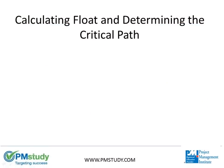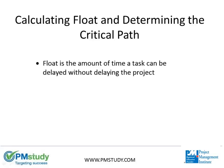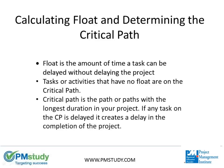Now that we have finished the forward and the backward pass, let's determine float for each task and locate the critical path. Remember, float is the amount of time a task can be delayed without delaying the critical path. Also, tasks or activities that have no float are on the critical path. The critical path is the path or paths with the longest duration in your project. If any task on the critical path is delayed, it will delay the completion date of the project.